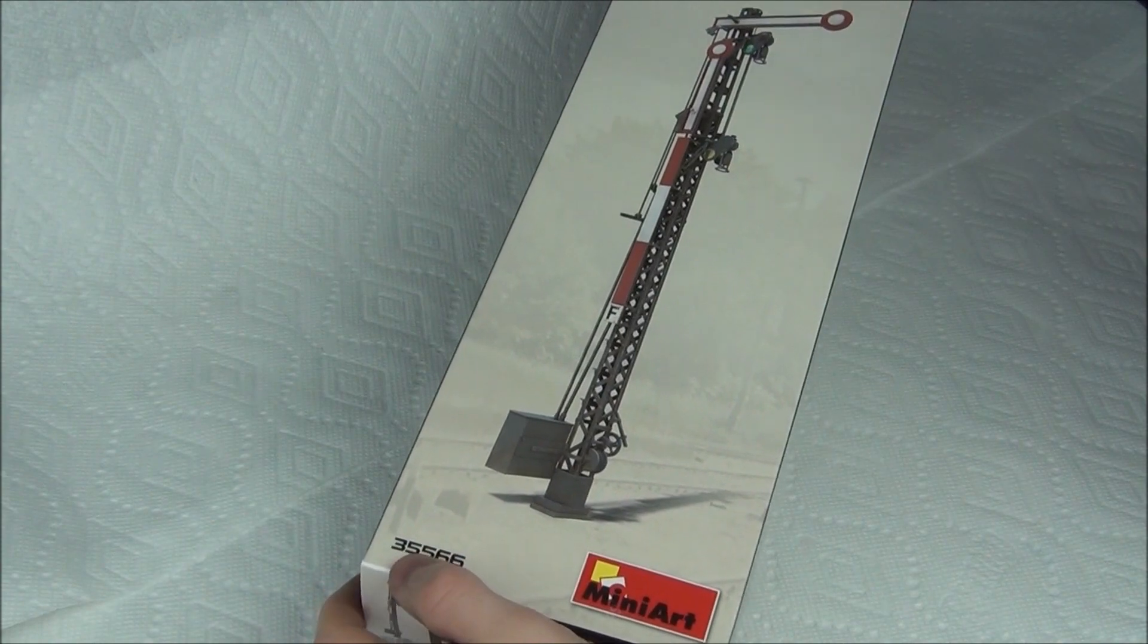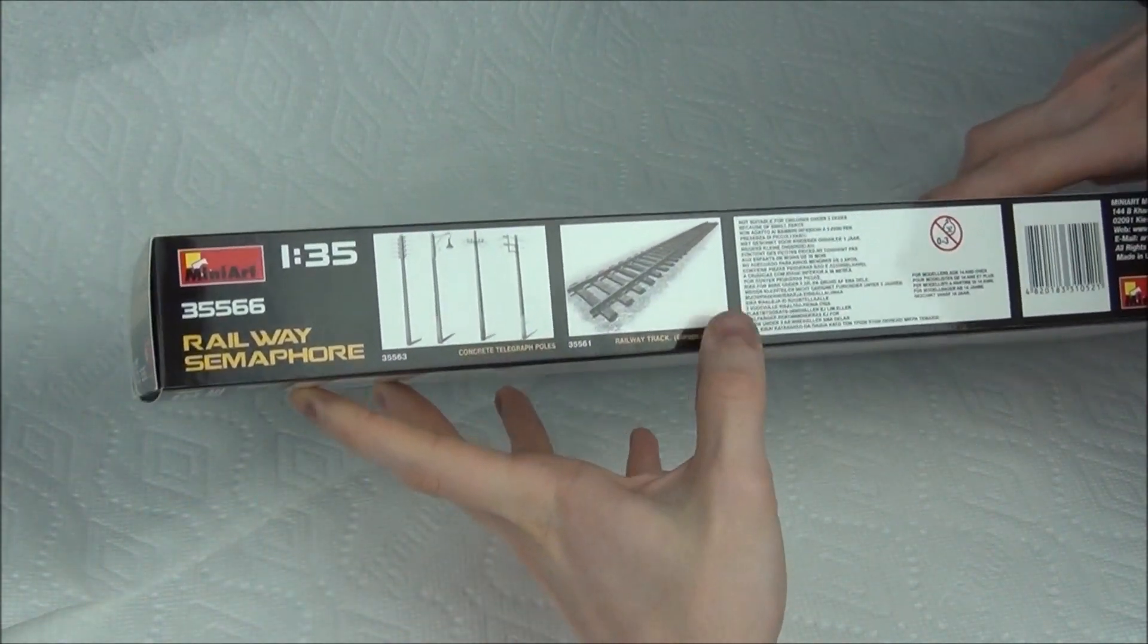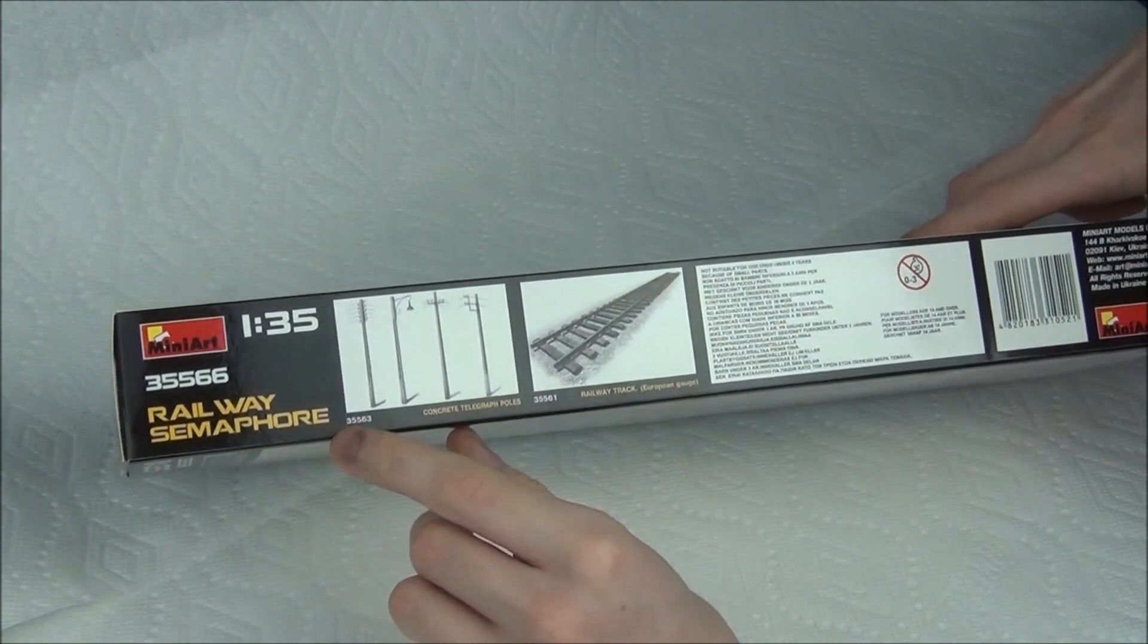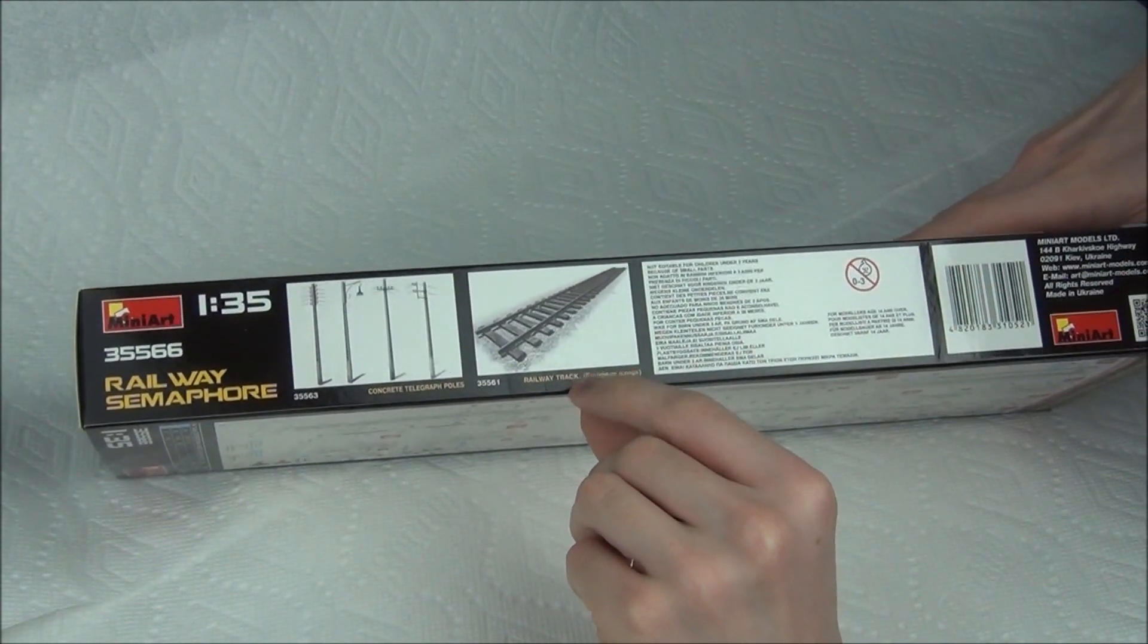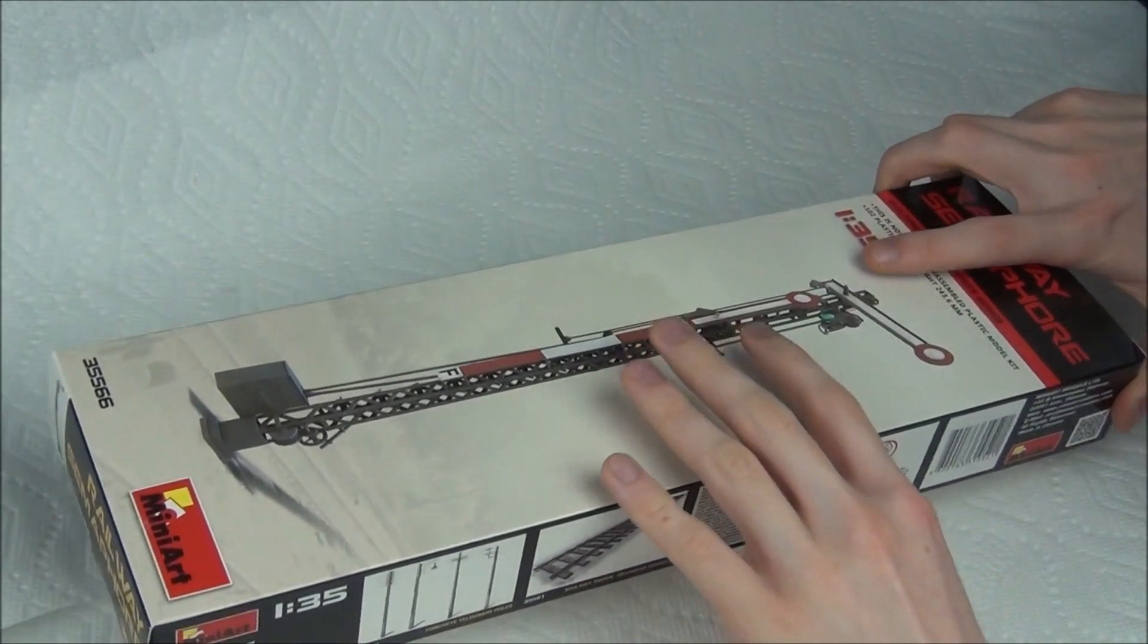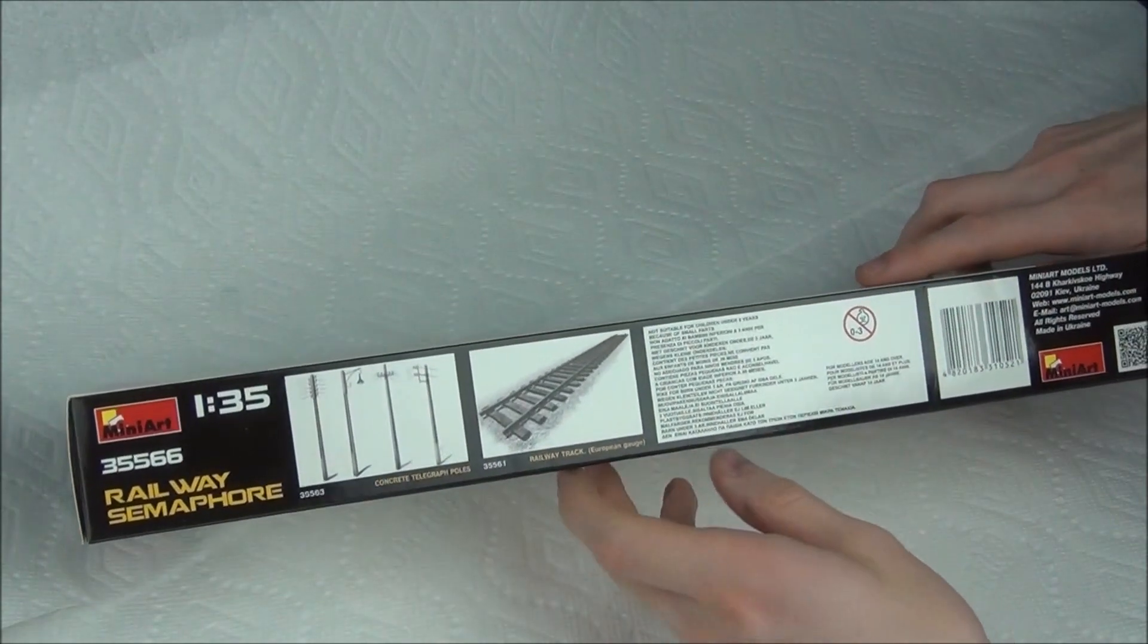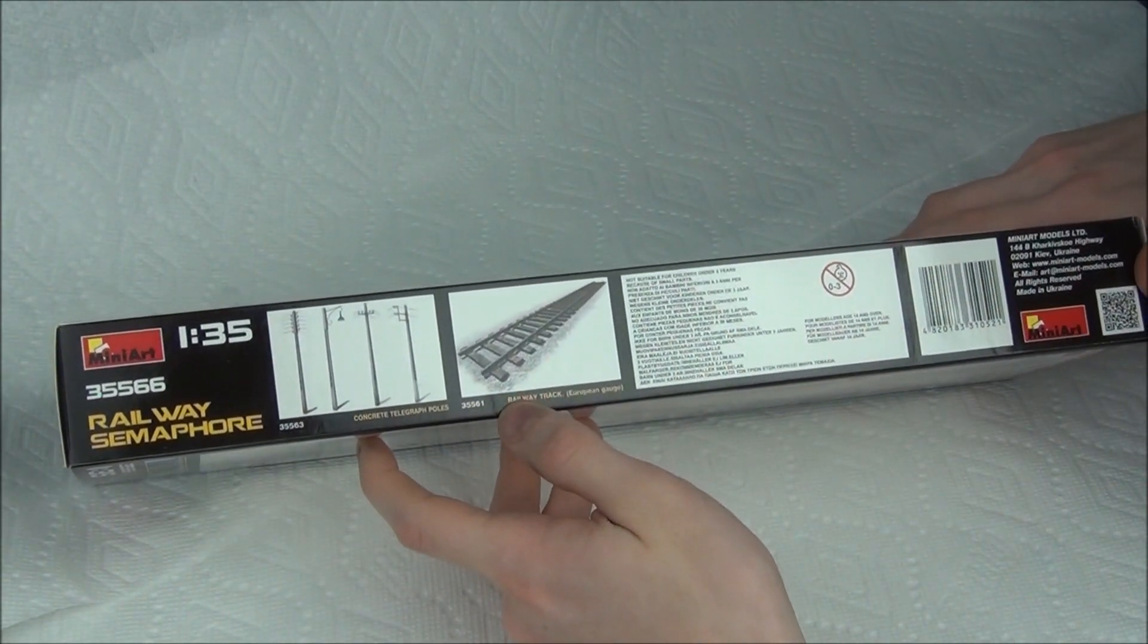Over here we've got the part number or kit number. On the sides we have some advertisements for more kits that they have, including telegraph poles. They have the European gauge track and also now have a Russian gauge track which is slightly different. I'm not sure if this signal is accurate for a Russian railway. It seems more like a European style one, so if you're going to do a diorama, you'd probably want these kind of tracks.